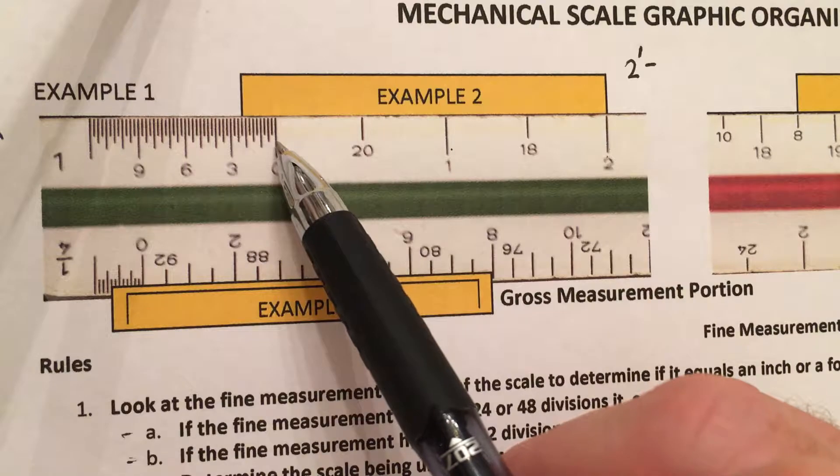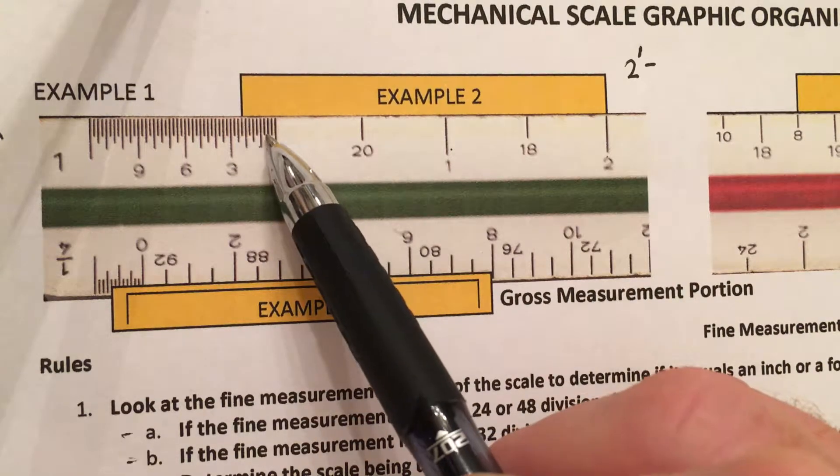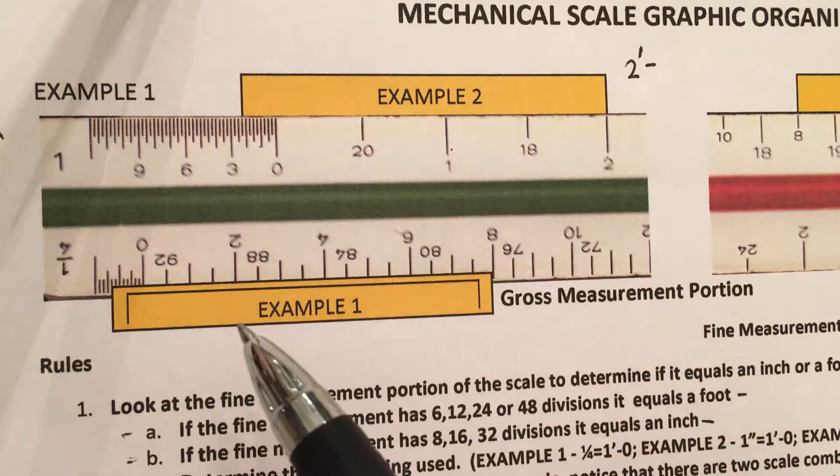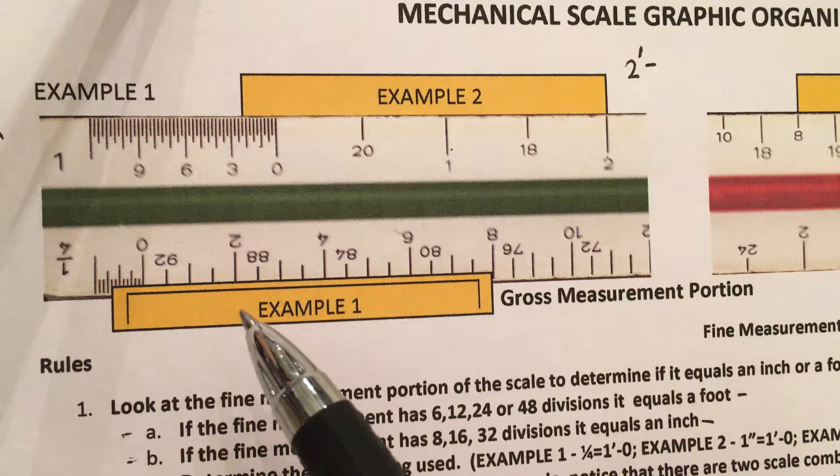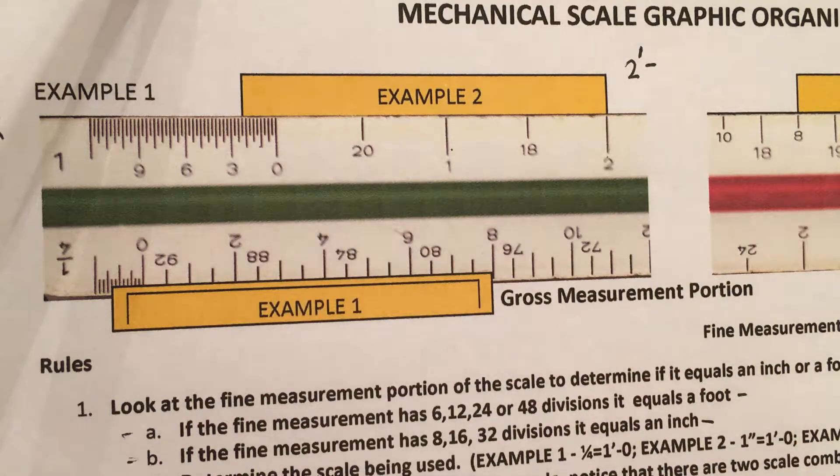So if I look between the number zero and one, I have one, two, three, four divisions. Well, I know that that's zero and one inch, and I know that if there are four divisions, that represents one quarter of an inch.